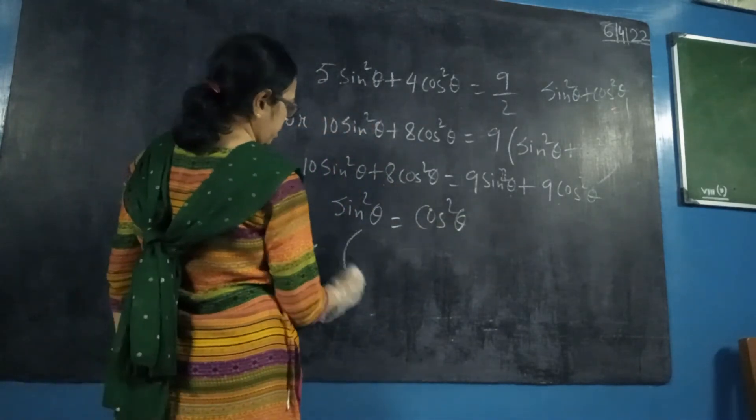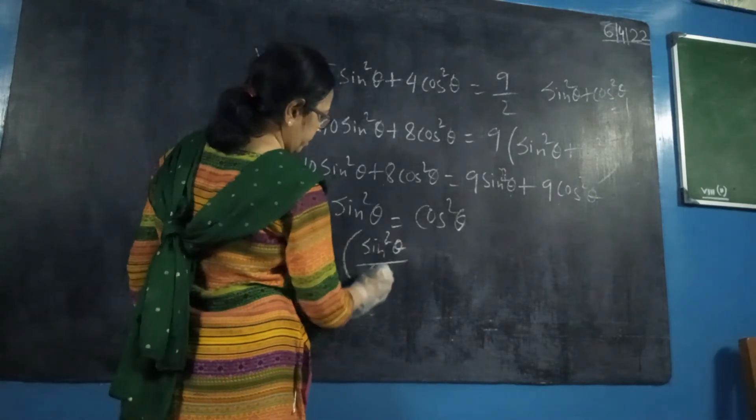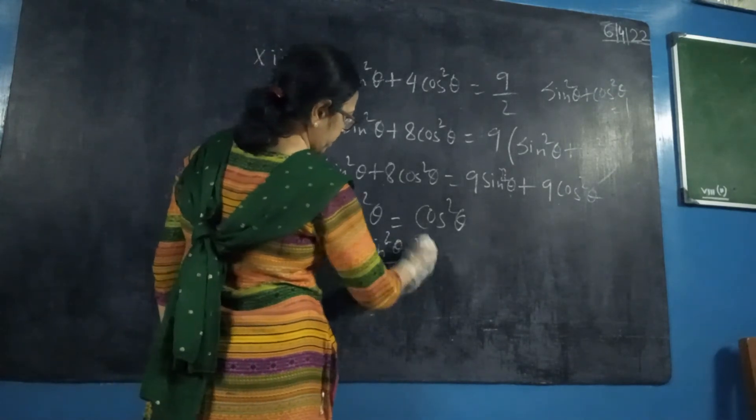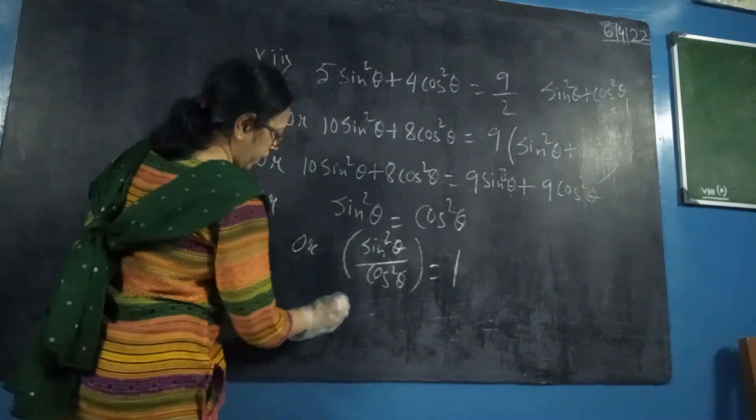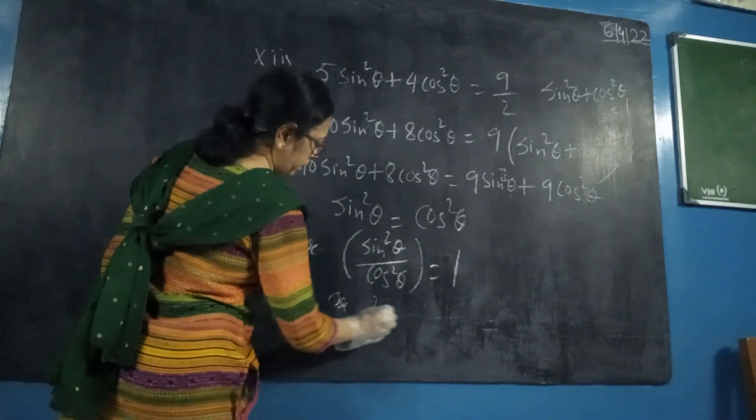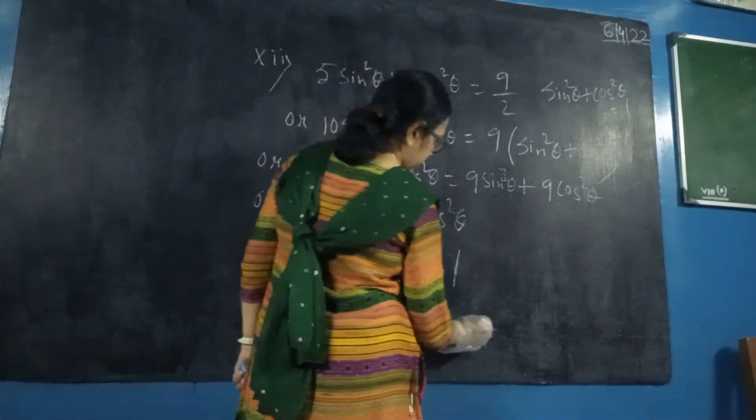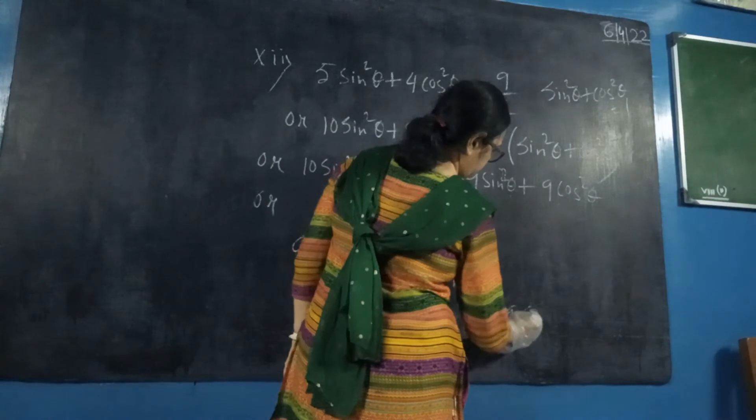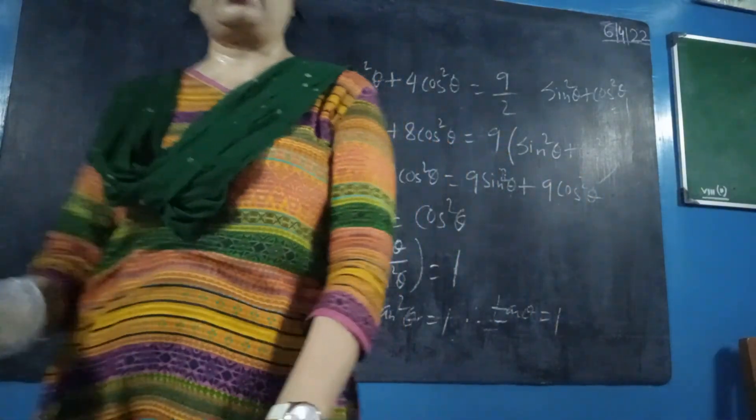Divide sine square theta by cos square theta equals 8. Sine by cosine means tan. So here we are getting tan square theta equals 8. Therefore tan theta equals root 8.